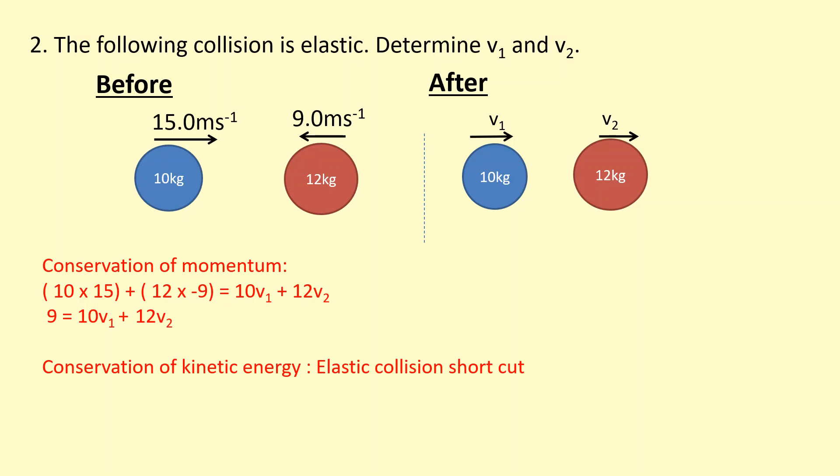Then I want to conserve kinetic energy using that shortcut. So initial velocity of particle one plus the final velocity of particle one equals the initial velocity of particle two plus the final velocity of particle two. And if I simplify this I get the following equation. Now I have two equations which I can solve like a simultaneous equation.